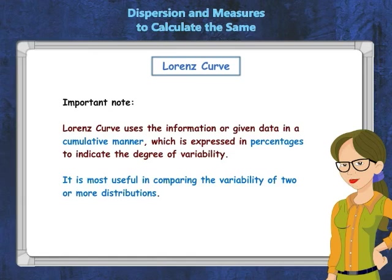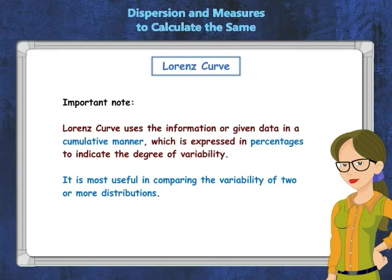It was developed by Max O. Lorenz in 1905 for representing the inequality of wealth distribution. The Lorenz Curve is a graphical representation of data in a cumulative manner, expressed in percentages to indicate the degree of variability. It is most useful in comparing the variability of two or more distributions.